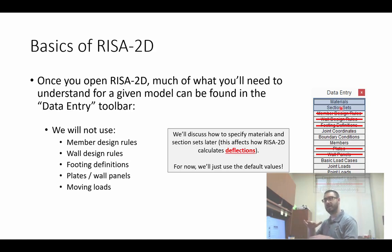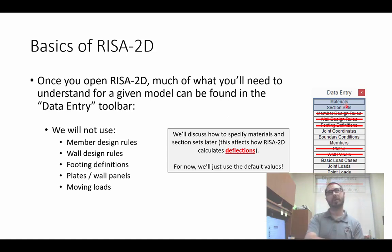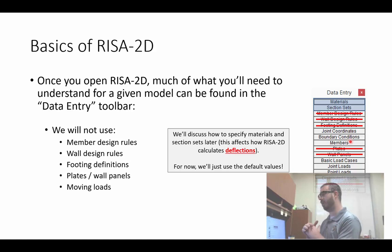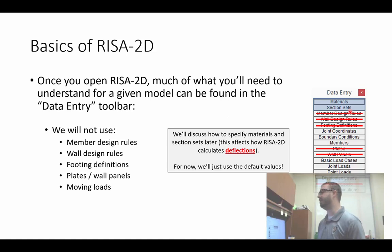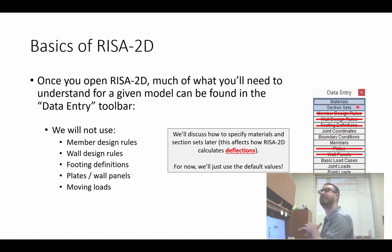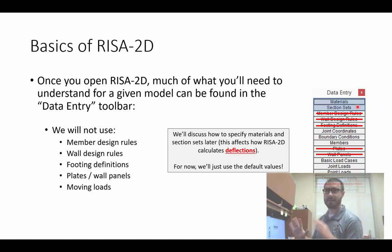The first lecture on Wednesday we're going to skip the materials and the section sets — we're going to do that after. The point is that we'll spend the first lecture just learning how to build some basic models, and then we'll go back and refine them by defining the materials and section sets later. If you're analyzing a statically determinate structure, you really don't need to worry too much about materials and section sets to get the force response right. The deflections won't match until your materials and section sets match.